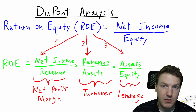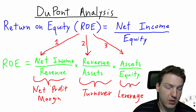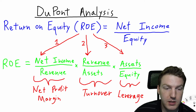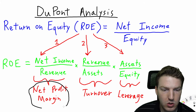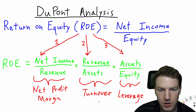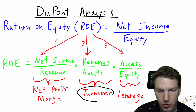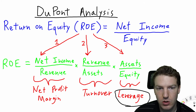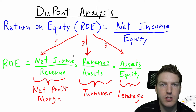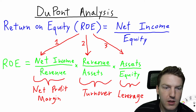The three components of the DuPont formula that we will multiply together are the net profit margin, the asset turnover, and the financial leverage. Now let's take a look at each of these components.